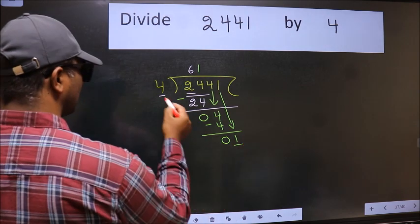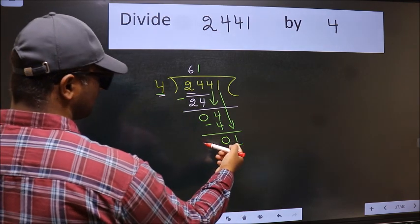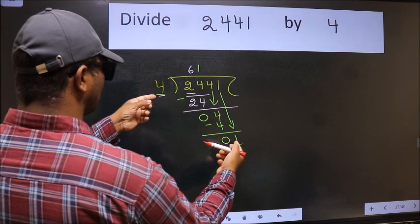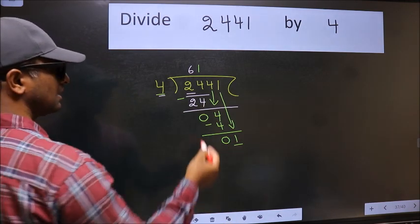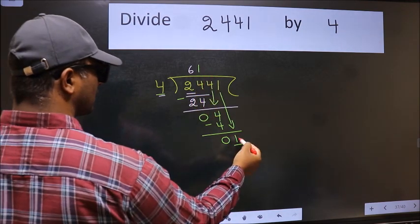And the mistake is this: here we have 1 and here 4. 1 is smaller than 4, so what many do is they directly put the dot and take 0.